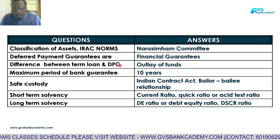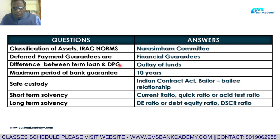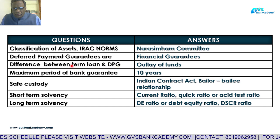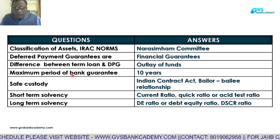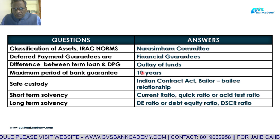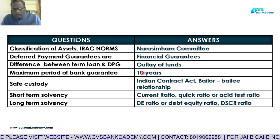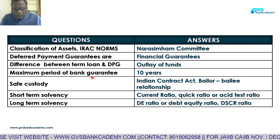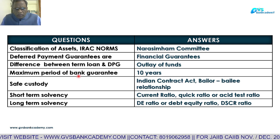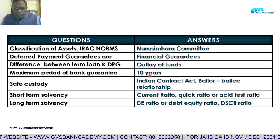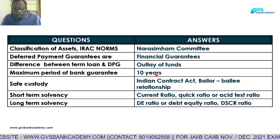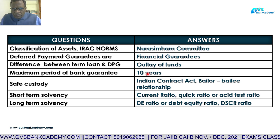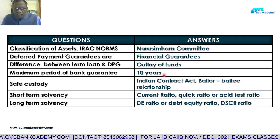The processing of a DPG — Deferred Payment Guarantee — is just like a term loan. The maximum period of a bank guarantee is generally 10 years. If any bank wants to issue a bank guarantee beyond 10 years, there must be a board-approved policy document in that bank. Anything beyond 10 years must be covered by a board-approved policy.